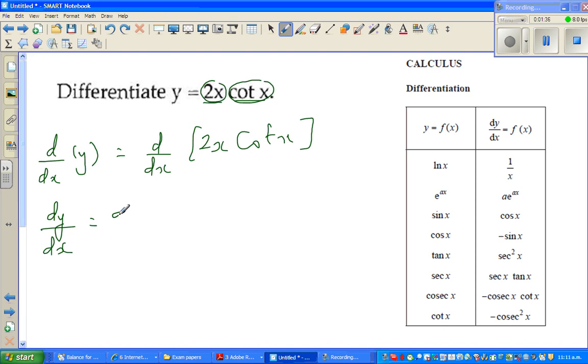Now I'm going to use the chain rule. So this is dy by dx of 2x. It's always good to write like this, times cot x. It may take a while, but it's always safe. And then d by dx of cot x, times 2x. So differentiate the first, leave the second as it is, plus differentiate the second, leave the first as it is.